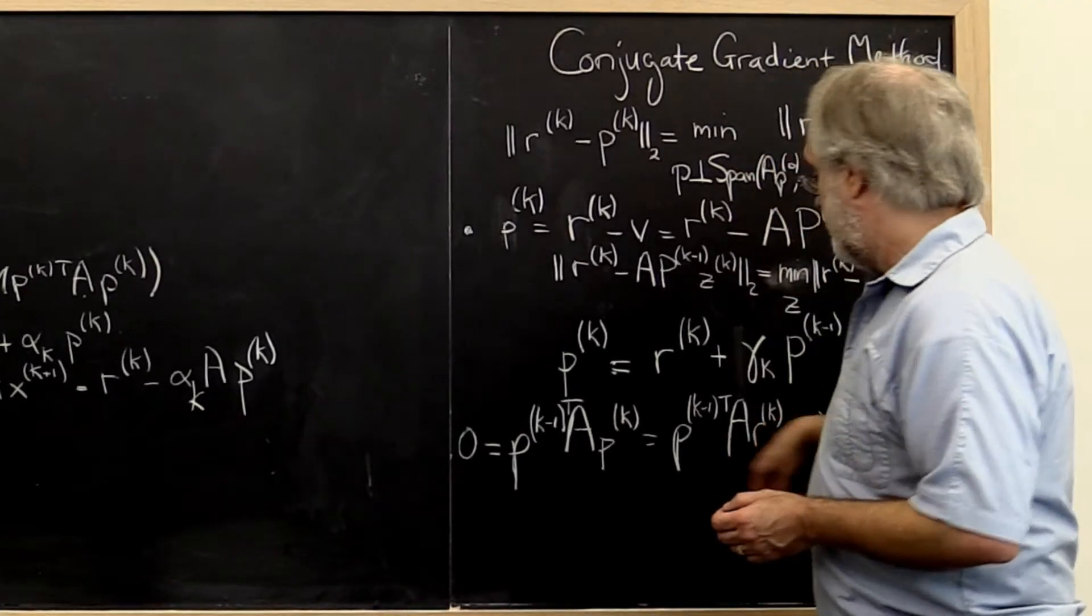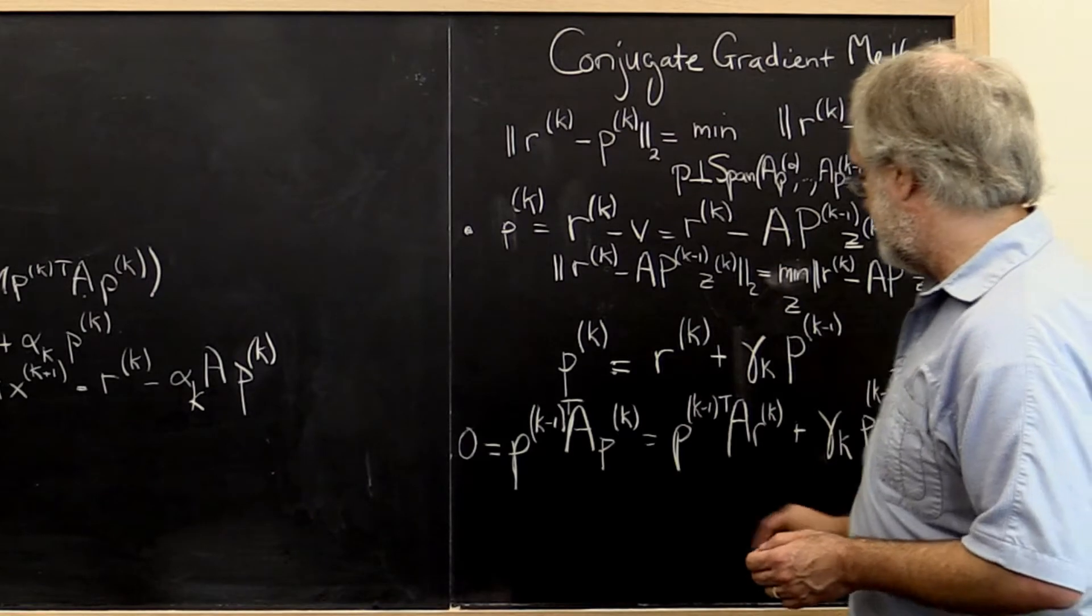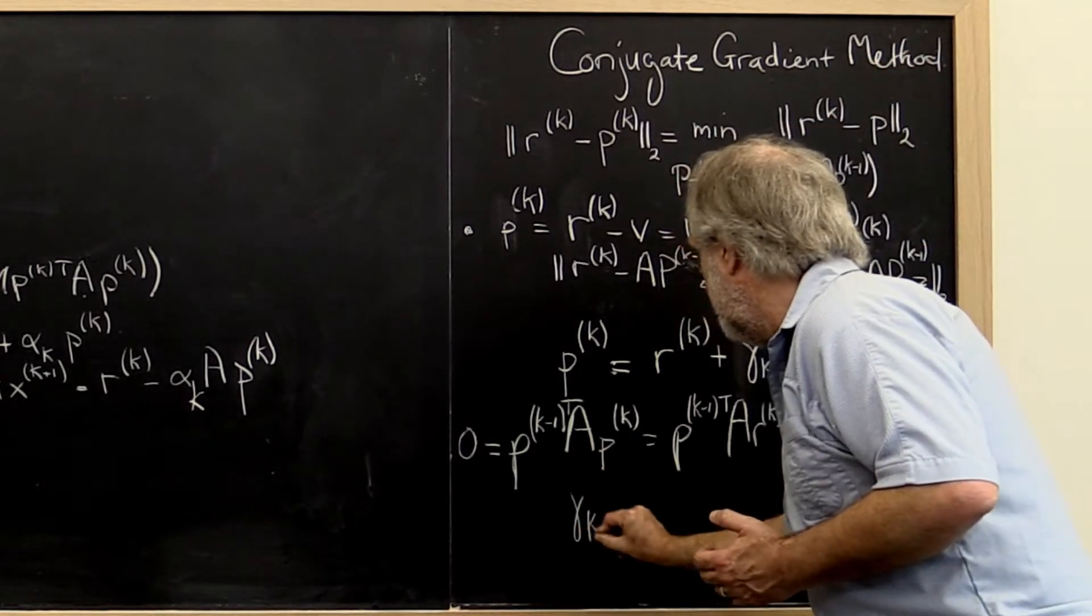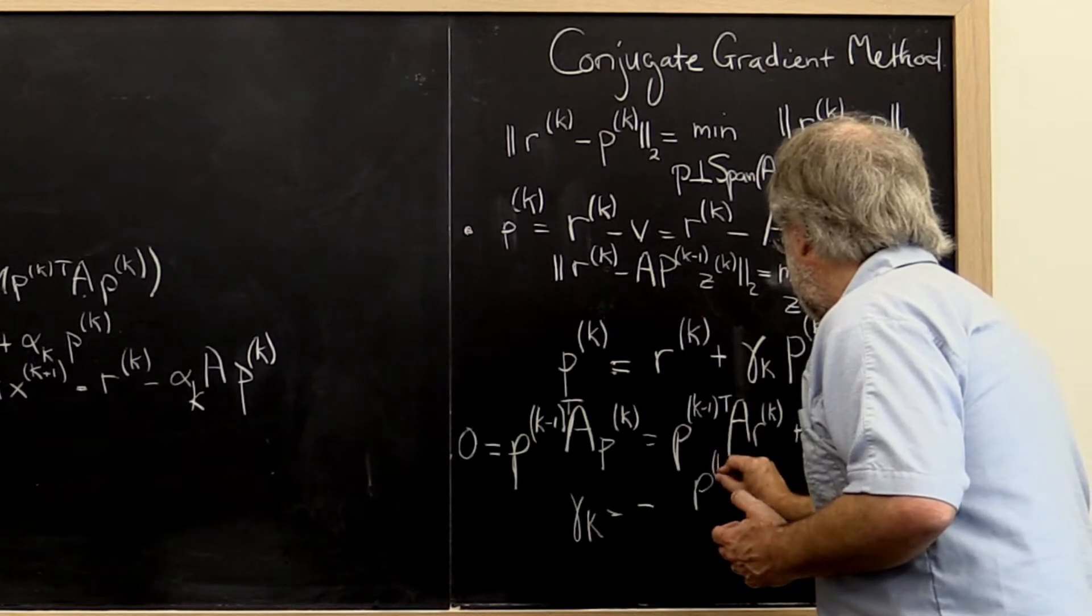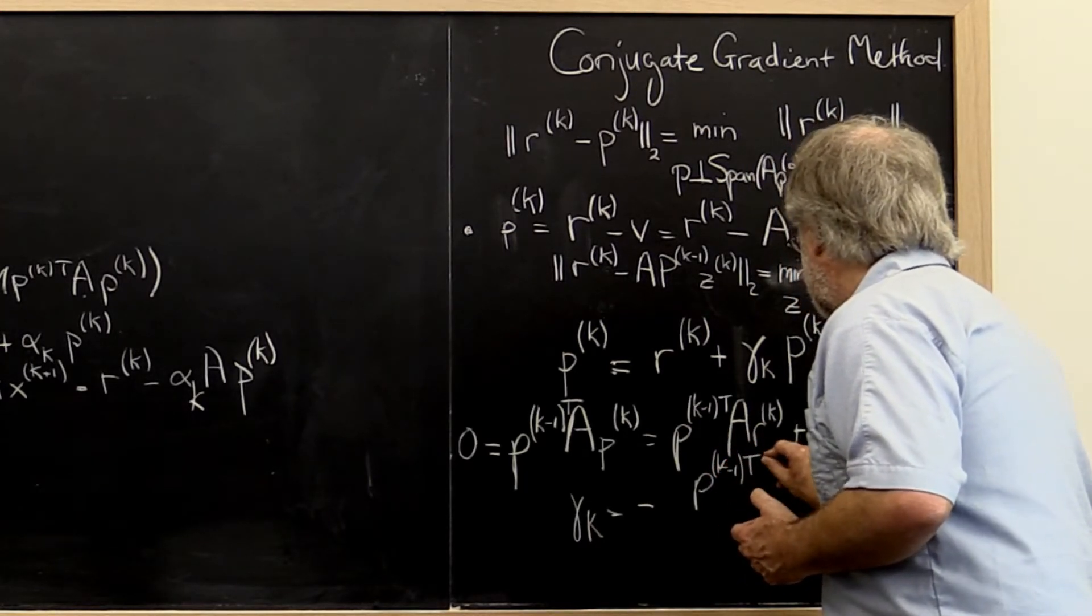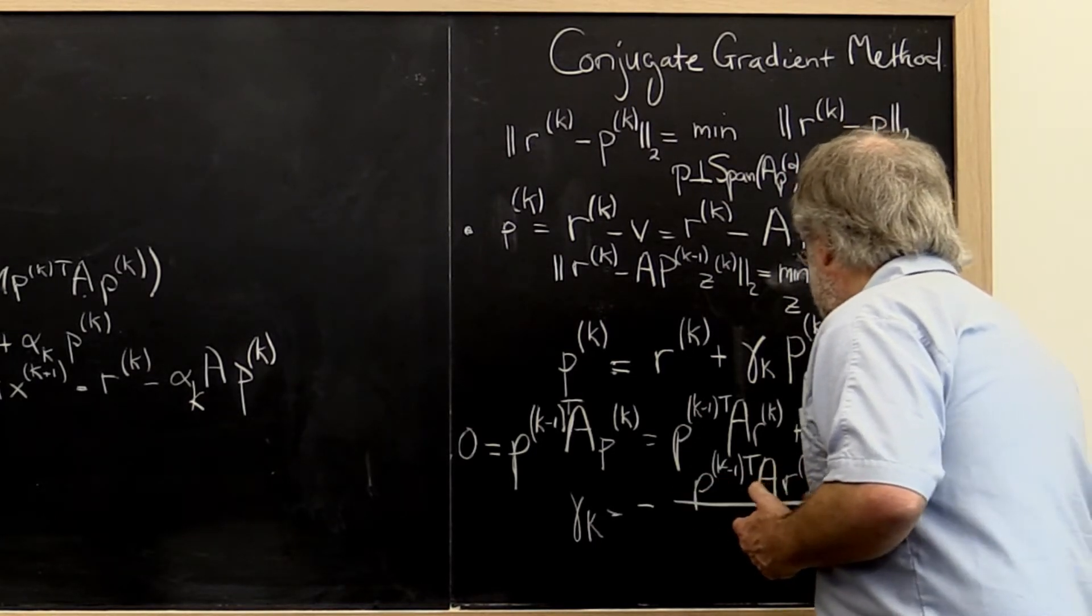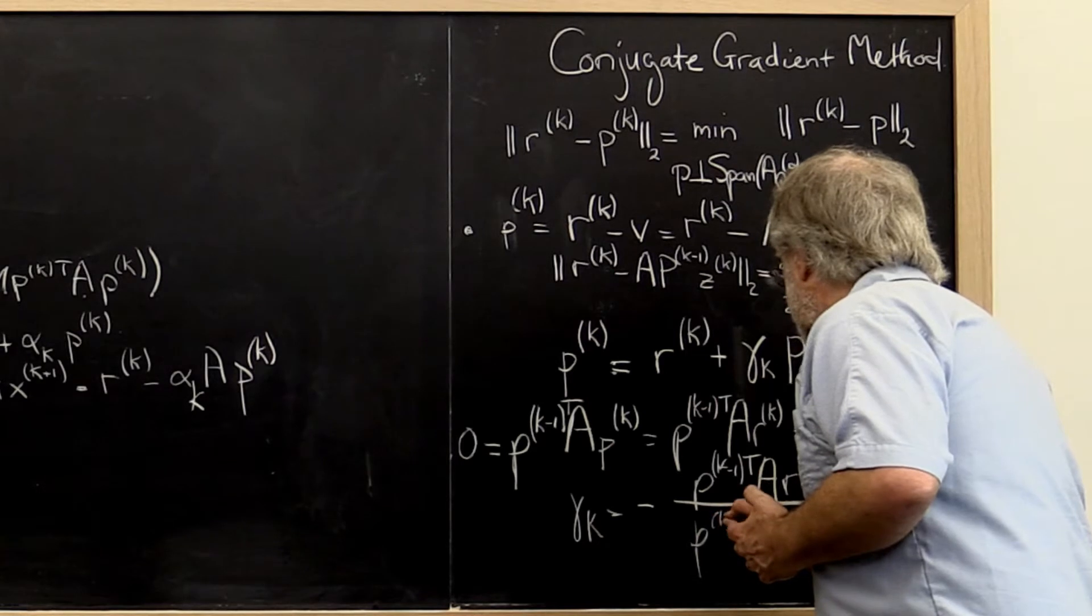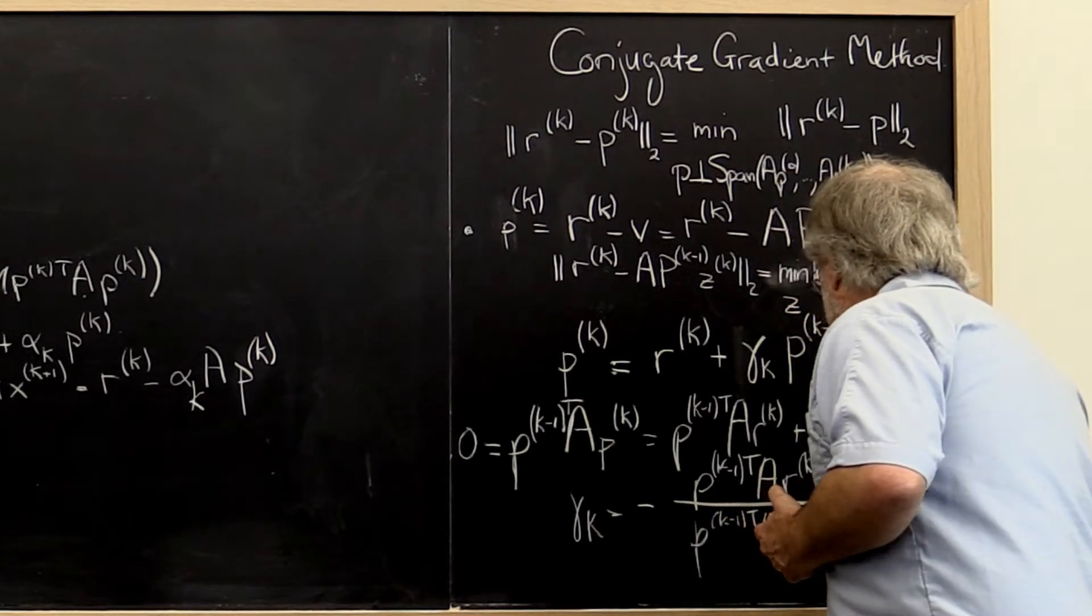So now we can solve this by noticing that we can bring this to the other side and then divide by that. So our gamma_k becomes the negative of p_{k-1} transpose A r_k divided by p_{k-1} transpose A p_{k-1}.